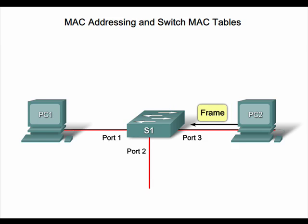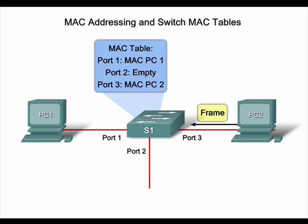In Steps 4 and 5, when the destination PC2 replies back to PC1, the switch populates the MAC address for PC2 and the port to which it is connected into the MAC address table. At this point, the switch has learned that PC1 is connected to port 1 and PC2 is connected to port 3.